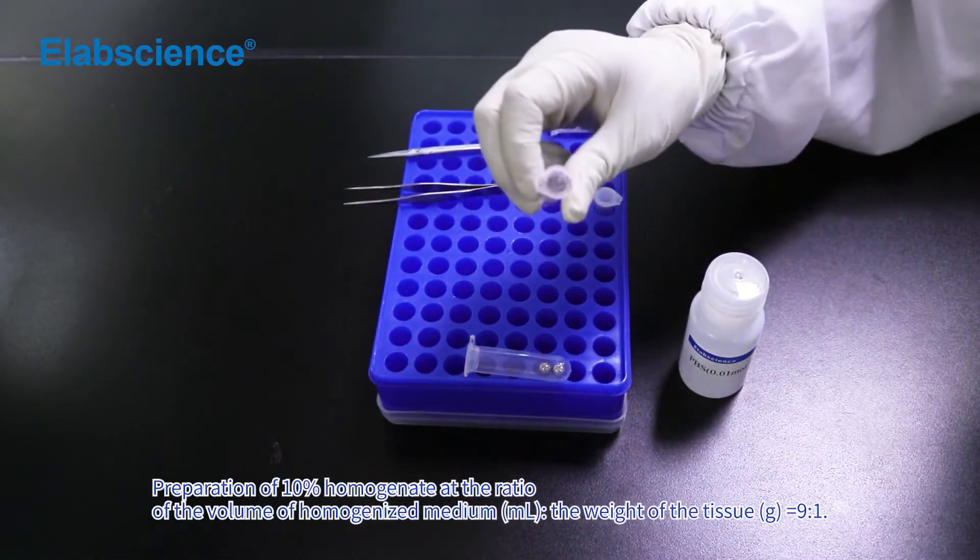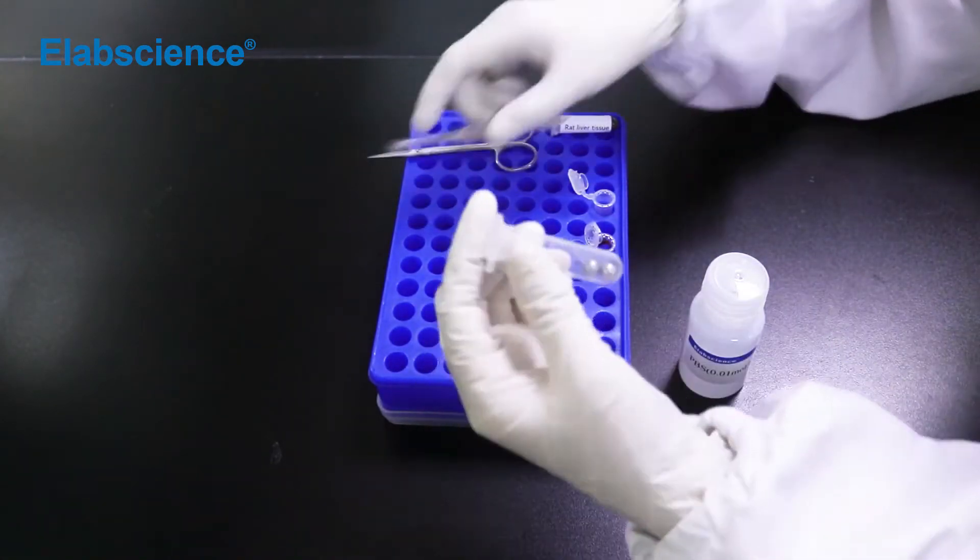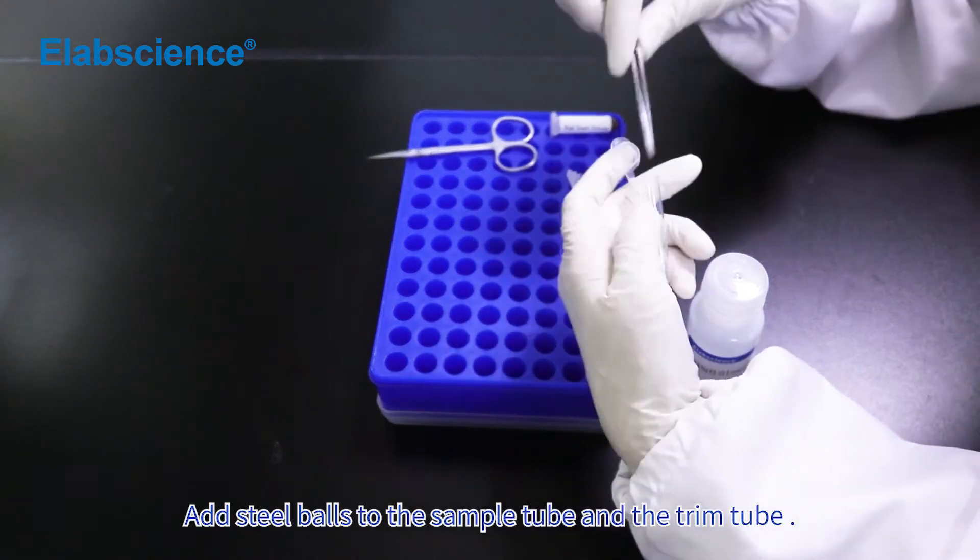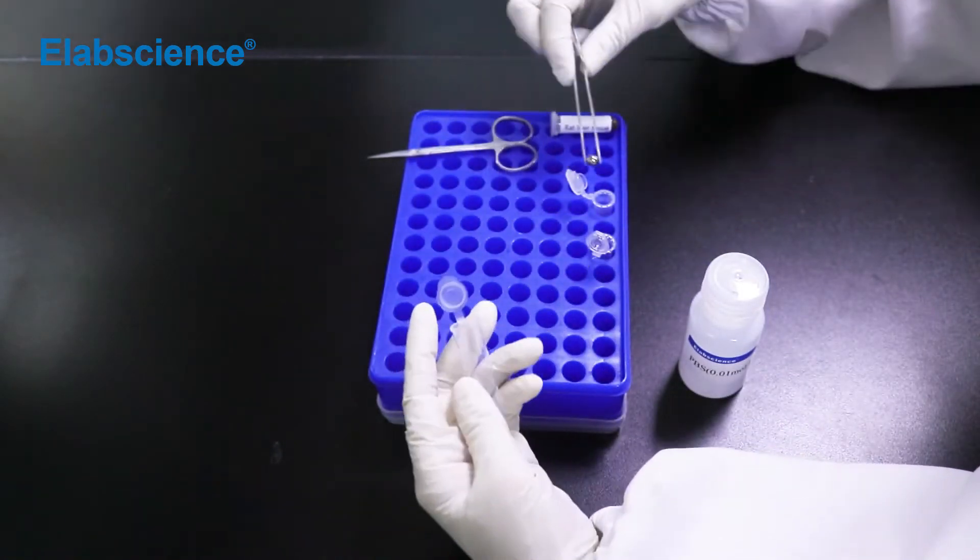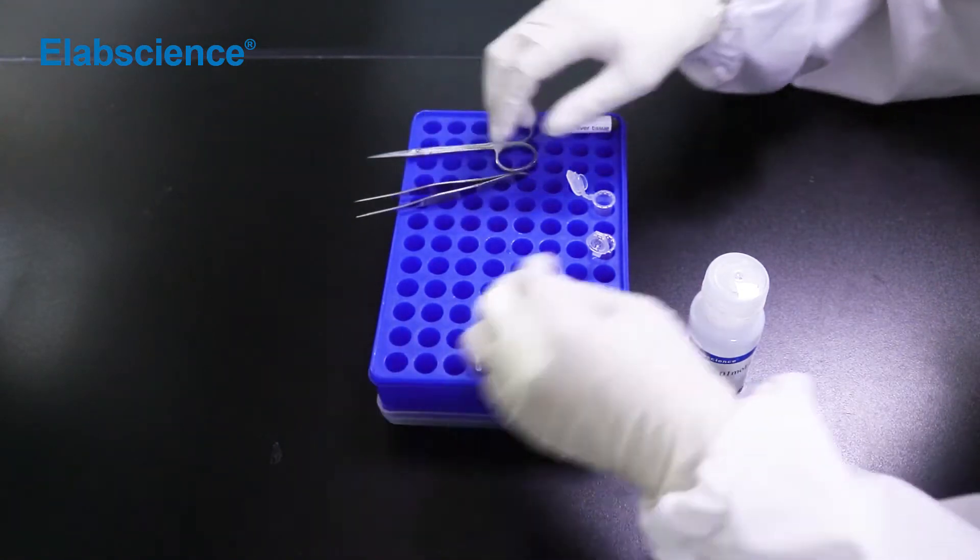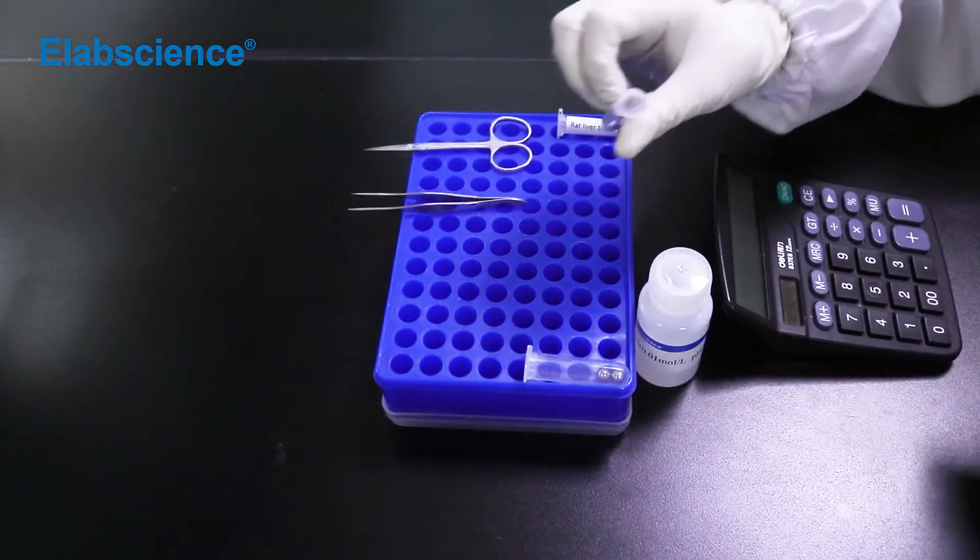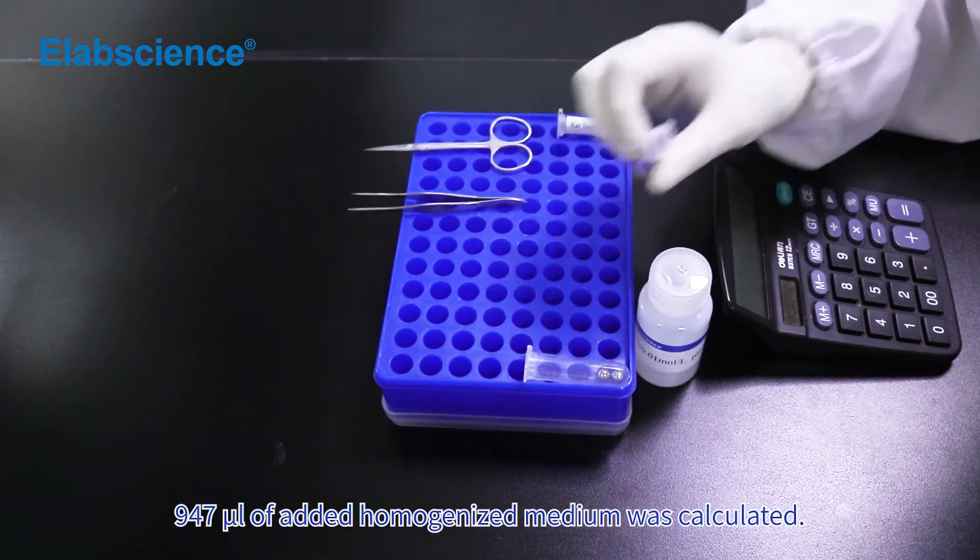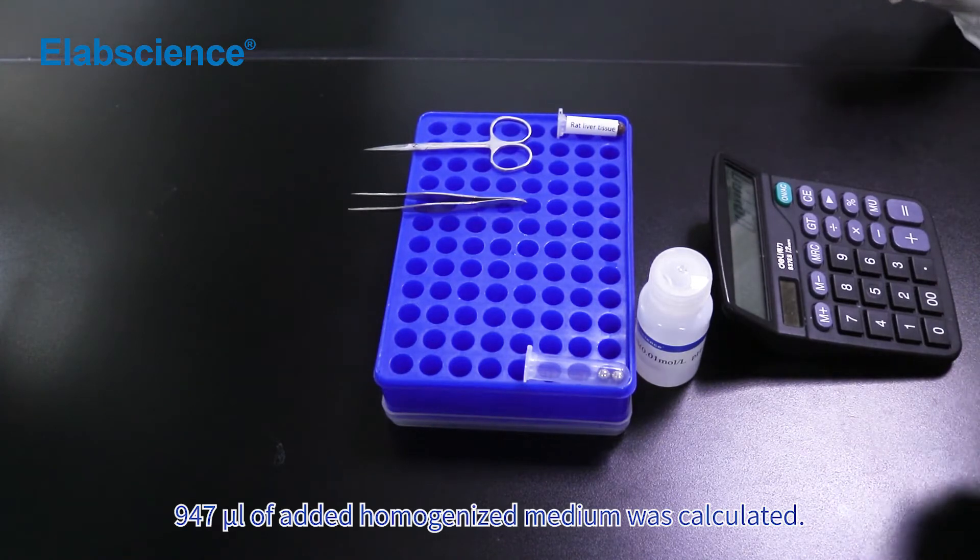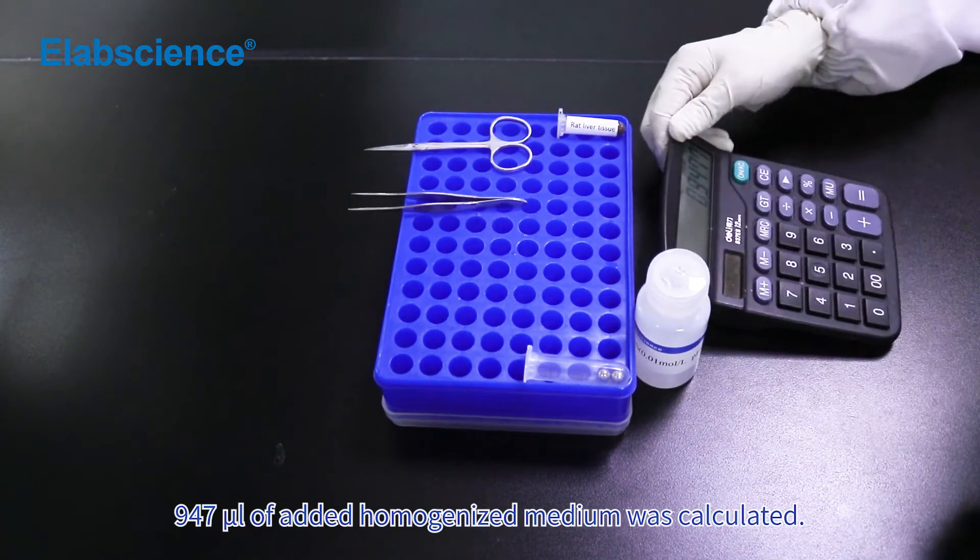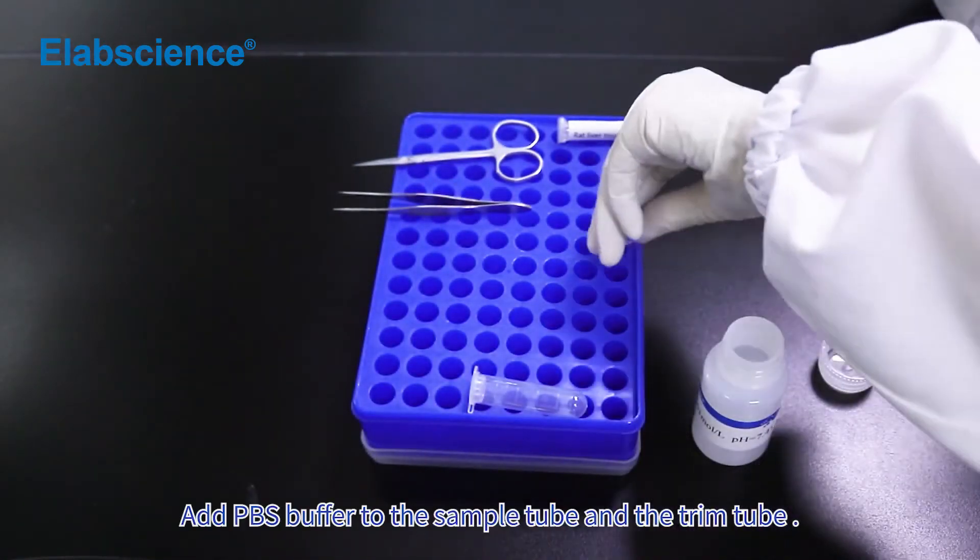Preparation of 10% homogenate. Add steel balls to the sample tube and the trim tube. 947 microliters of homogenized medium was calculated. Add PBS buffer to the sample tube and the trim tube.